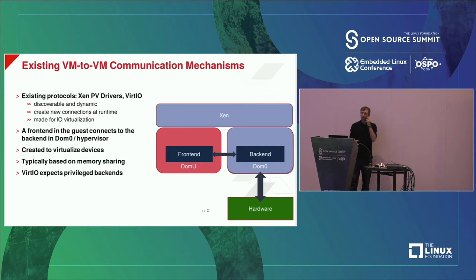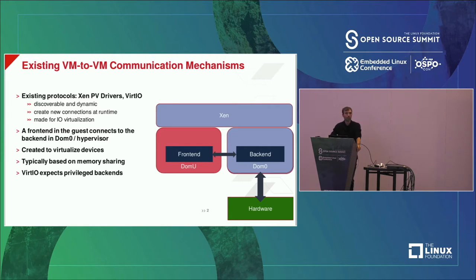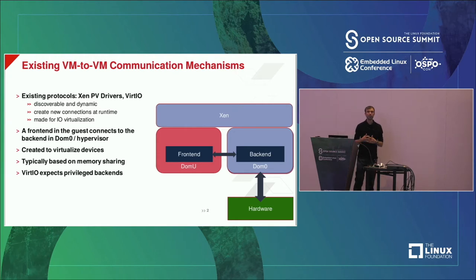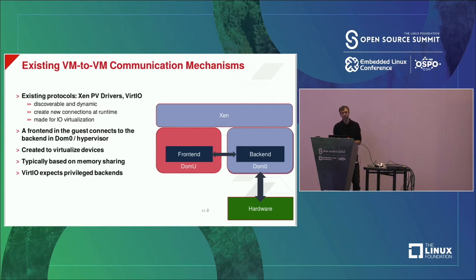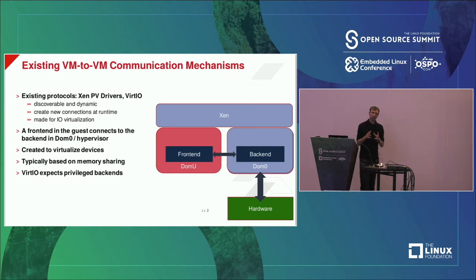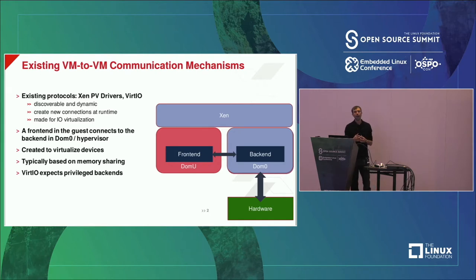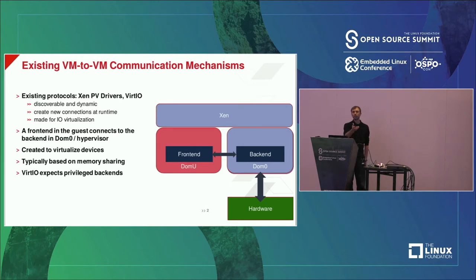Let me start from what is already out there that you're probably already familiar with. There are XEN PV drivers, and there is VirtIO. Both of them are discoverable and dynamic, so the purpose is that at runtime you can detect and use new paravirtualized IO. You can hot-plug new paravirtualized IO devices. It's also meant to create connections at runtime, so it's not like you define statically who can communicate with what. It's made for IO virtualization rather than VM to VM communication.